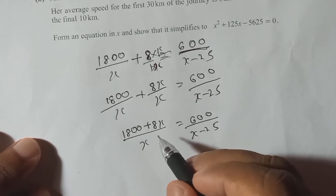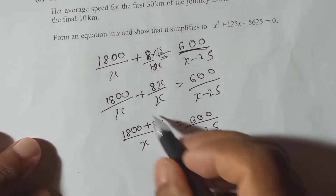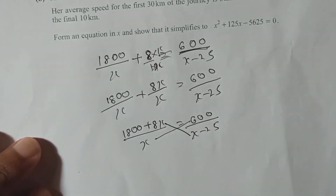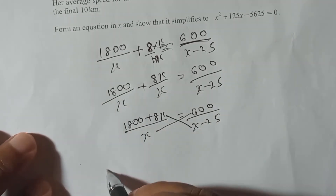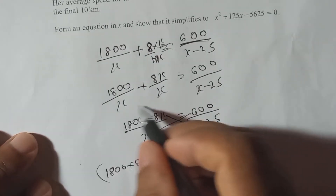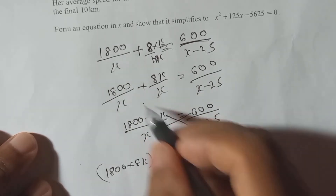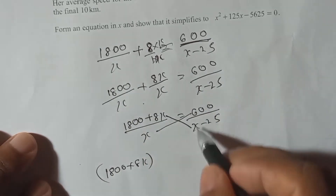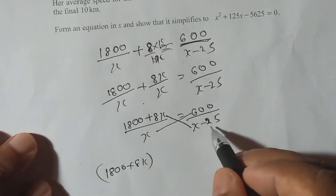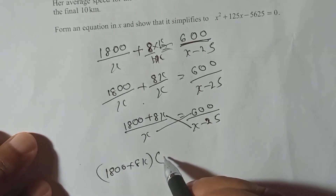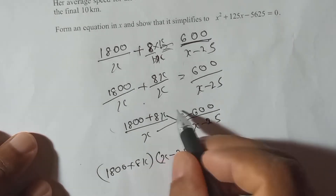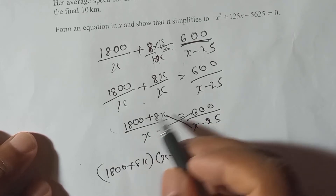Now we can apply cross multiplication because both sides are single fractions. So (1800 + 8x) times (x minus 25) equals 600 times x. We need to expand — both (1800 + 8x) and (x minus 25) are binomial expressions, so we use bracket multiplication.